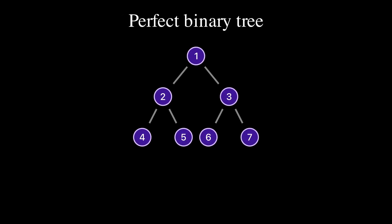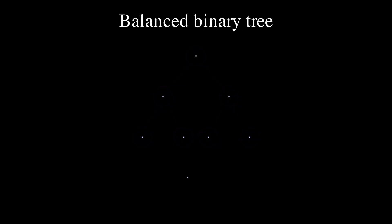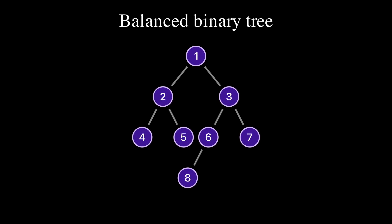A binary tree is called perfect if all the levels are completely filled with nodes. A binary tree is called balanced if the height difference between the left and right sub-trees of any node is at most one.